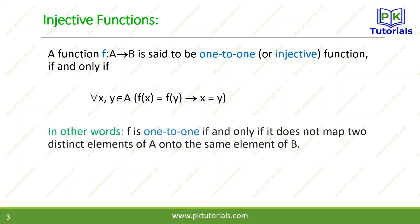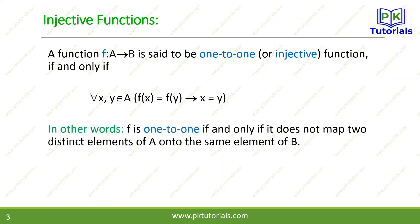In other words, f is one-to-one if and only if it does not map two distinct elements of A to the same element of B. یعنی کوئی بھی element of B کو ایک ہی وقت میں دو مختلف elements کا image نہیں بنایا جائے گا۔